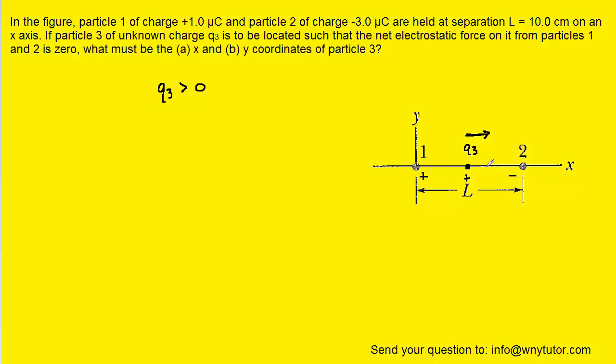Similarly, because charge 2 is negative, it would be exerting an attractive force on charge 3 and it would also be pulling on charge 3 to the right. Well because both of those forces are pointing to the right, they will not be able to cancel. So we can't put charge 3 between the two charges.